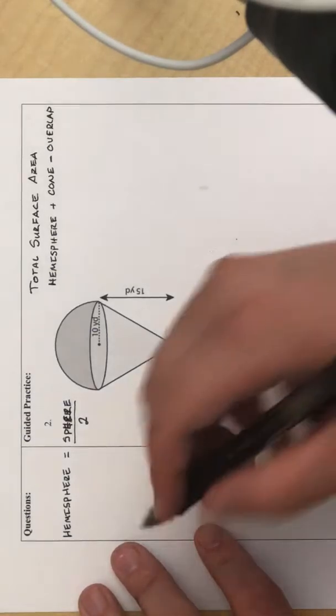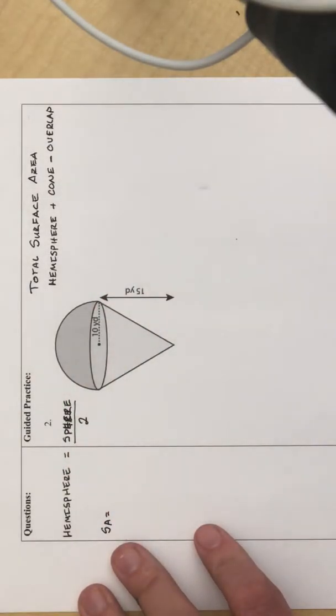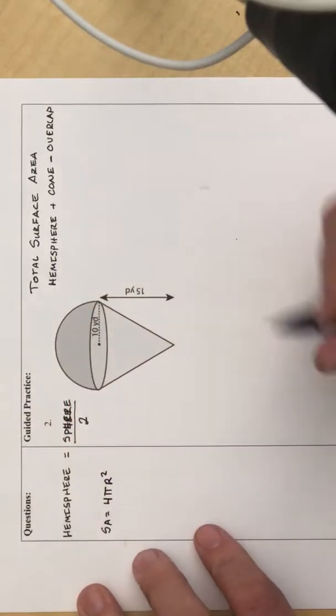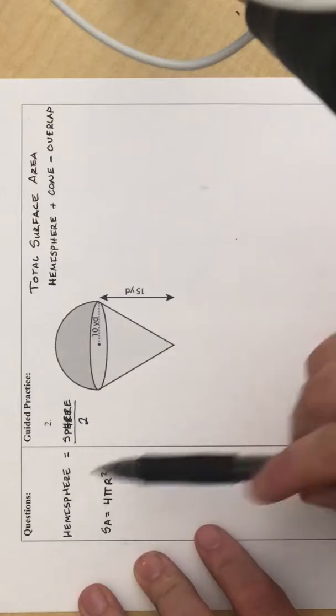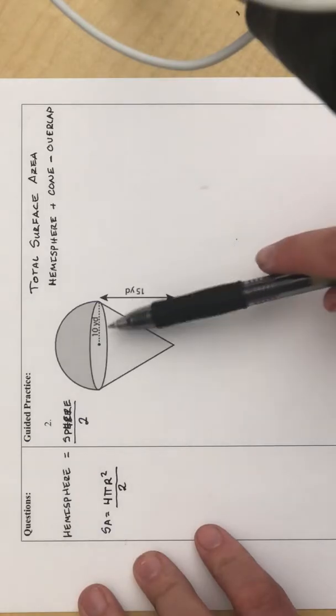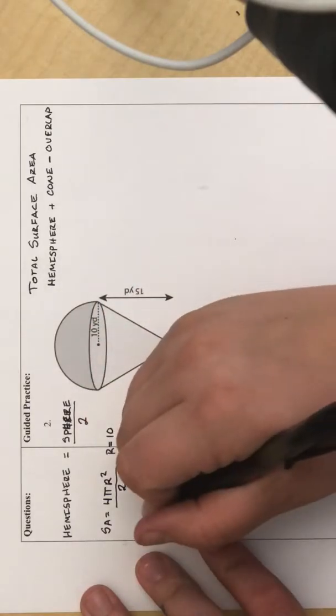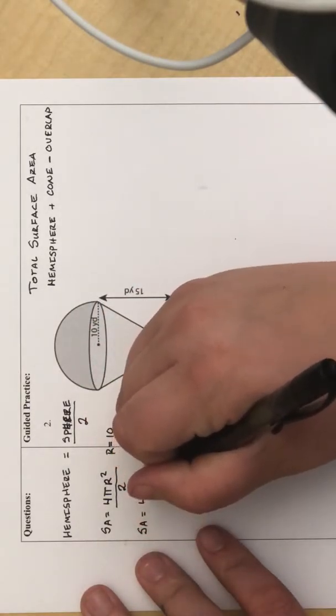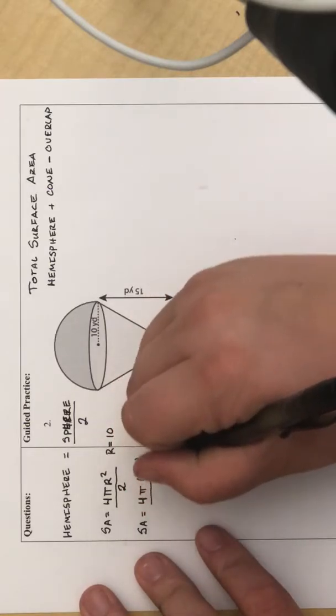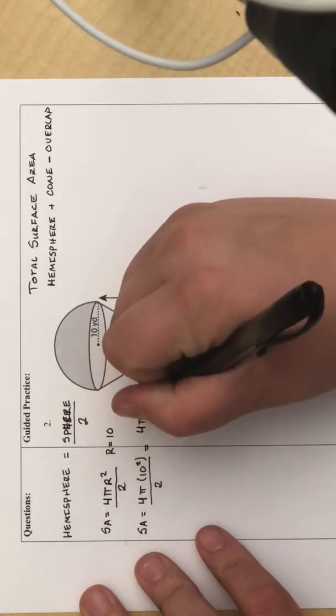So that's exactly what we are going to do. The surface area of a sphere is 4 times pi times r squared. But if we only need a hemisphere, we are going to divide it by 2. In this example, the radius is 10. So I am going to write that down and plug it in. The surface area is 4 times pi times 10 squared divided by 2. And 10 squared is 100.